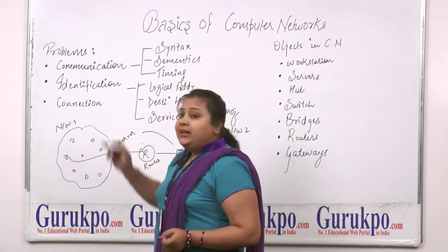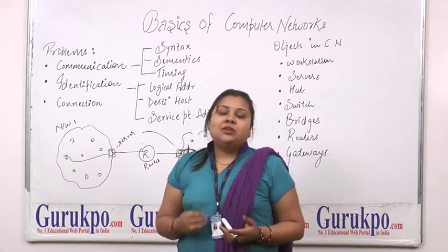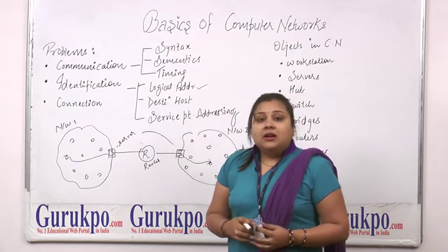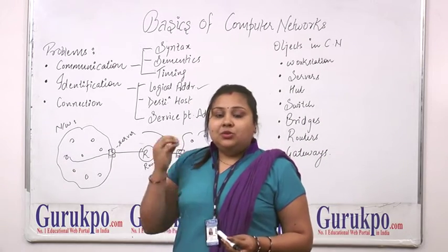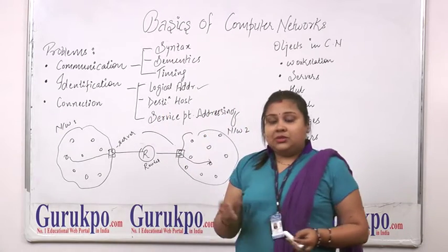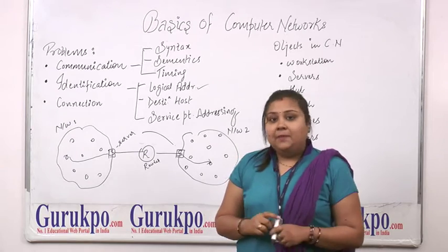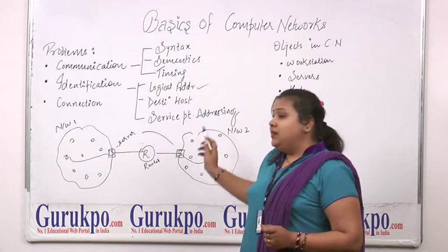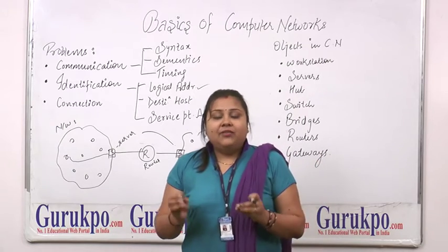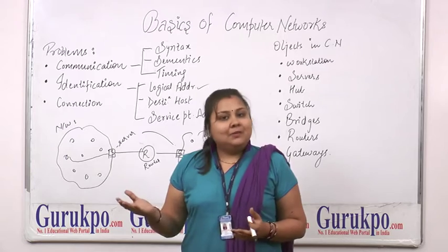Another problem is with identification — that is, where to send the data. There are three levels of identification. The first level is logical addressing, which means to which network you want to send the data. Then comes destination host — on that network, which is the destination host you want to send the data. And then comes service point addressing, which means in which format you want to send data — if it is a PDF, it should be sent in PDF format.